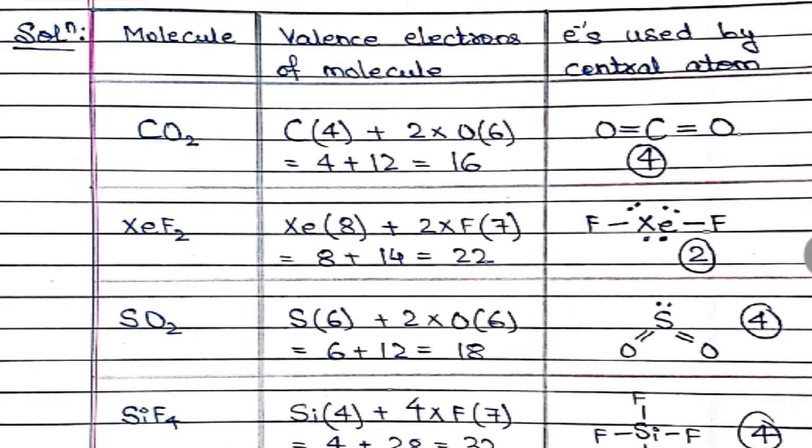Silicon tetrafluoride: silicon belonging to carbon family has four valence electrons, plus fluorine having seven, but there are four fluorine atoms (28), and total would be 4 + 28 = 32. Silicon uses all four valence electrons to bond with four fluorine atoms, hence the electrons used by central atom is four.